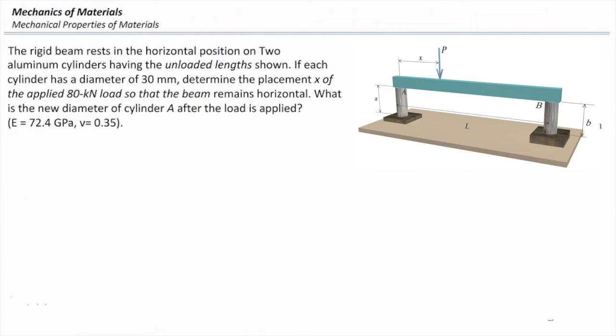And the second part, what is the new diameter of cylinder A after load is applied? So we want to determine where would be the appropriate position of that 80 kilonewton load if we want to have that beam horizontal after applying the load.